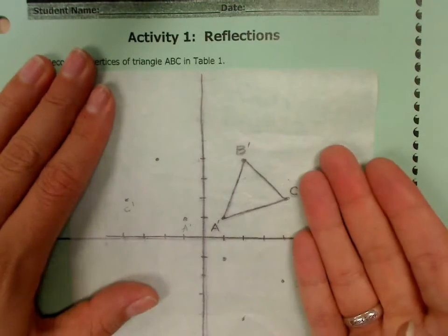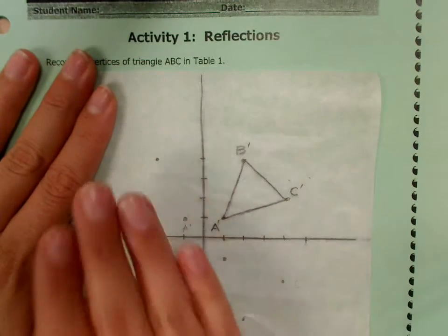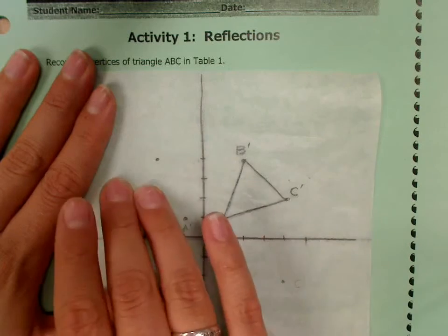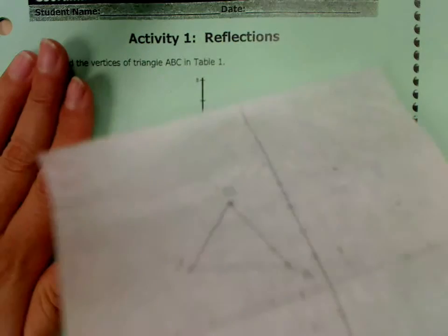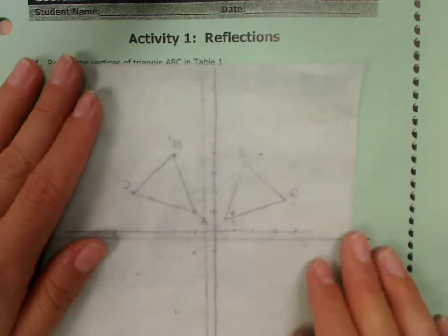And so it's going to be a reflection where it goes across or it kind of flips over or jumps over the y-axis. So take your patty paper and actually flip it over and line up your axes.